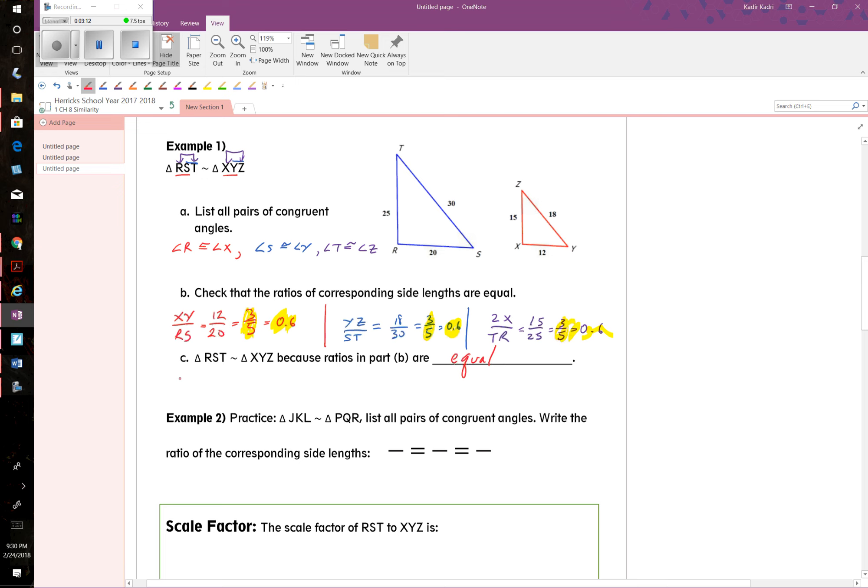And one way—the first way we did it—we did big and small on top. That's the way we set it up, which was really just what we did: XY over RS is equal to YZ over ST is equal to ZX over TR. That's one way.